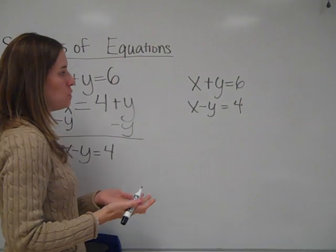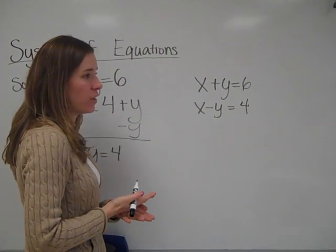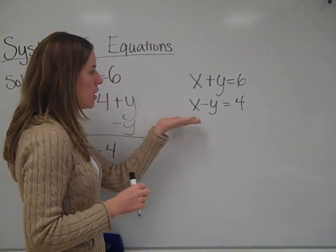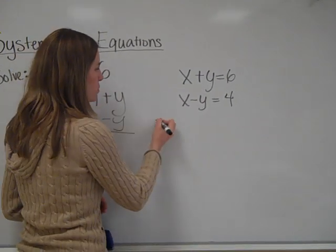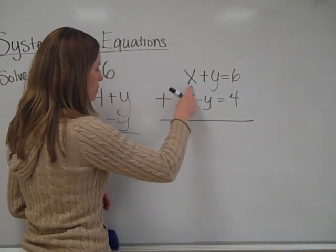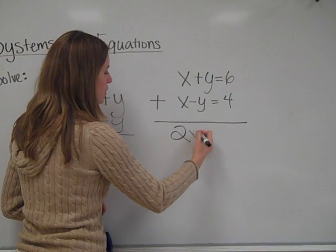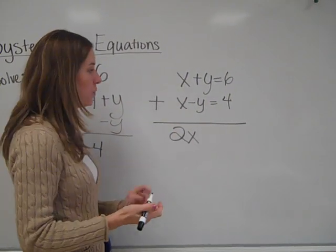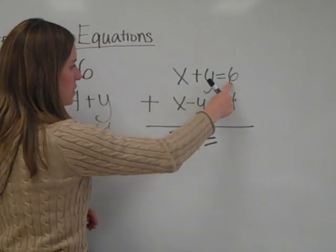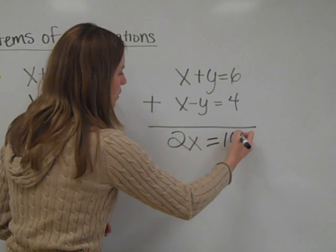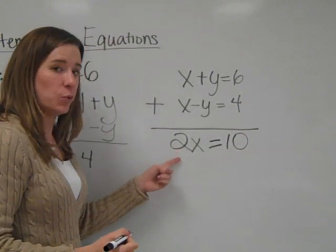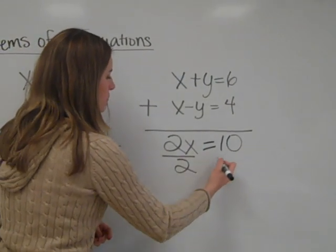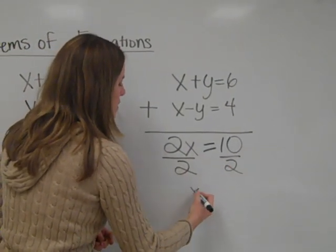With our systems of equations, we're going to add the two equations together. The reason why we do that is we want one of the variables to be eliminated. If we add the two equations together, we get x plus x equals 2x. Positive y plus a negative y cancels out to be 0, so we don't write anything, and 6 plus 4 is equal to 10. We then have 2x is equal to 10, and the y variable was canceled out.